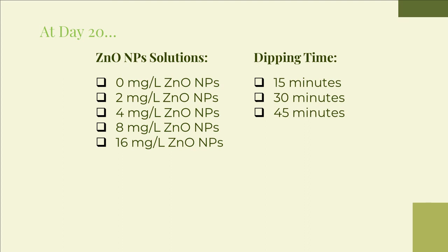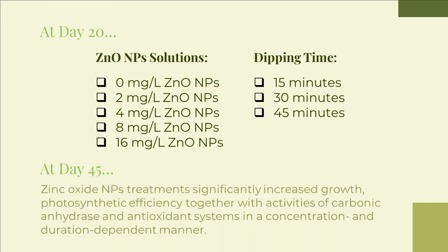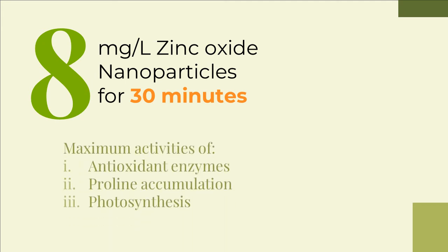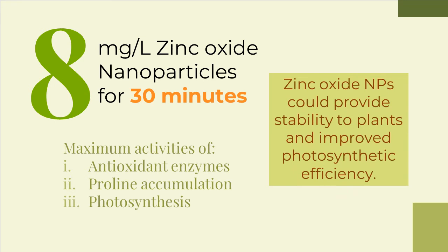Then, the seedlings were transplanted in their respective cups and allowed to grow under natural environmental conditions. At the 45-day stage of growth, the zinc oxide nanoparticle treatments had significantly increased growth, photosynthetic efficiency, together with activities of carbonic anhydrase and antioxidant systems in a concentration- and duration-dependent manner. Moreover, the treatment of 8 milligrams per liter of zinc oxide nanoparticles for 30 minutes proved to be the most effective, resulting in maximum activities of antioxidant enzymes, proline accumulation, and the photosynthetic rate.